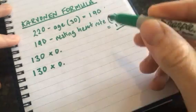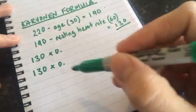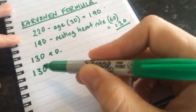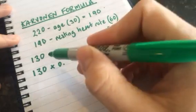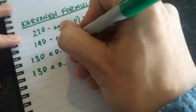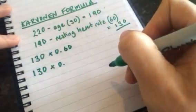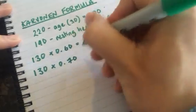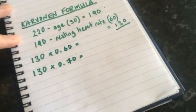I want to work out 60% of 130 and 70% of 130. So I do my times 0 point, and all I do now is I write 60 here, or 60 and 70 here. I've just got to calculate those.